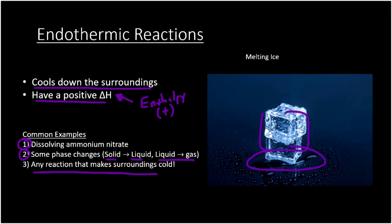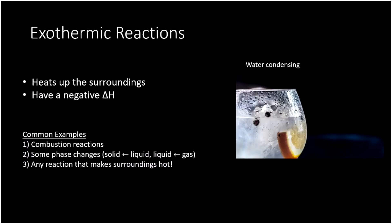Now let's look at exothermic reactions. Exothermic reactions heat up the surroundings and, opposite to endothermic reactions, have a negative delta H. Anytime you see a negative delta H, it means the chemical reaction is releasing energy into the surroundings. Common examples include combustion reactions — burning wood, propane, gasoline, or butane. Any burning process releases energy and is exothermic.